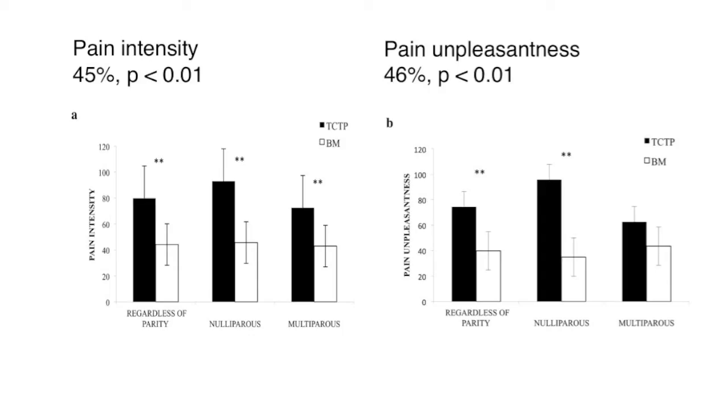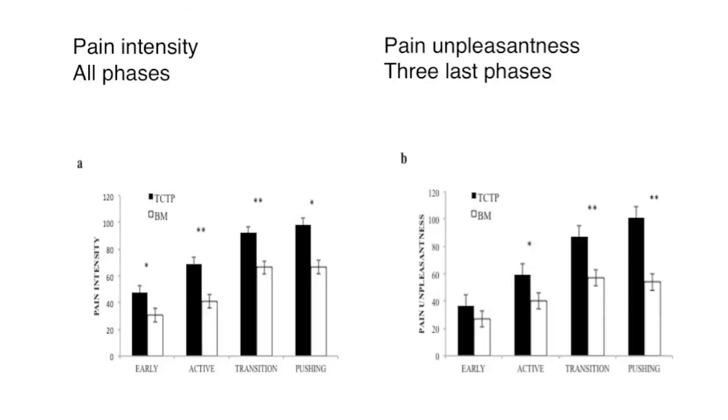The results show a reduction of both pain intensity and pain unpleasantness of 45 and 46 percent respectively. This reduction is present during all phases of labor and delivery for pain intensity, and the last three phases for pain unpleasantness. This shows that non-pharmacologic approaches to reduce pain work — reducing both intensity and unpleasantness at a level probably tolerable to most women. Future research should include randomized controlled trials evaluating not only pain intensity and unpleasantness, but also different obstetrical outcomes.